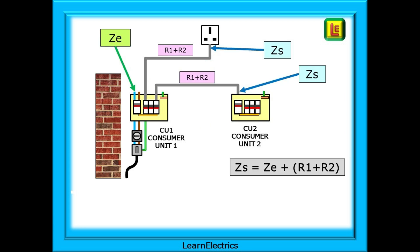Look at the ZS measurements next. We have a ZE for the supply, measured at the main switch of CU1. Each of the two circuits has an R1 plus R2 value that can be measured.